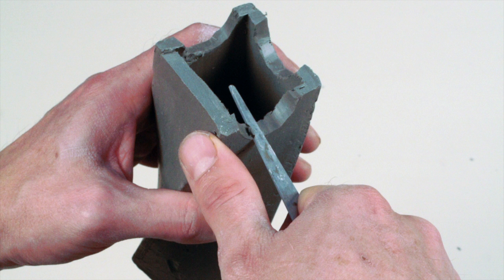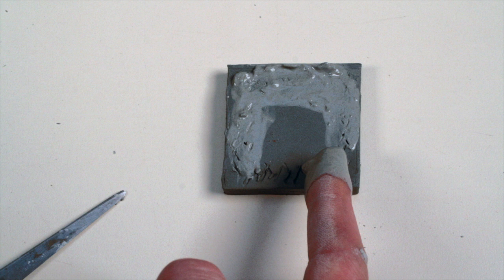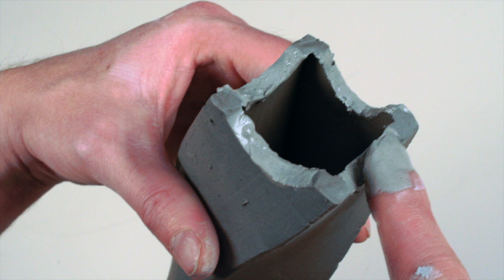This allows more negative space at the bottom of the piece. Using a scoring tool, make hatch marks in both a 2-inch square and the arched bottom of your extruded tube. Apply slip to both sides.